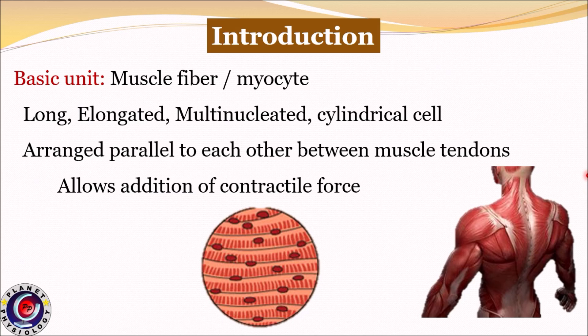The basic structural and functional unit of muscle is called muscle fiber or myocyte. It is a long, elongated, multinucleated cell, cylindrical in shape, and is innervated by a motor nerve fiber in its center. Impulses in this motor fiber initiate muscle contraction.